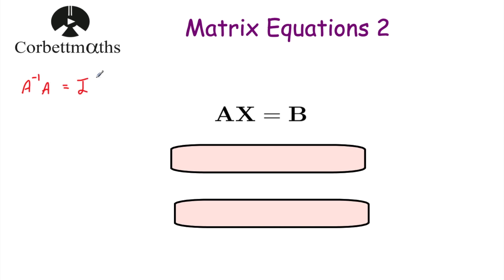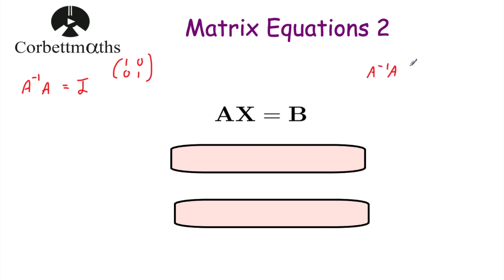The identity matrix I, for 2 by 2 matrices, is 1, 0, 0, 1. Whenever we multiply a matrix by the identity matrix, we're just left with that matrix. So if we take this and multiply both sides by the inverse of A — the inverse of A times A times X — it's very important that you get the order correct: the inverse of A must go at the front. So the inverse of A times A times X equals the inverse of A times B.